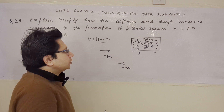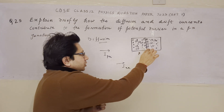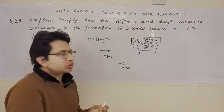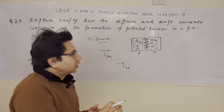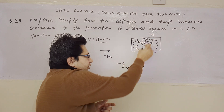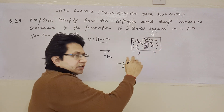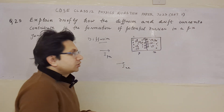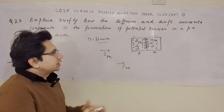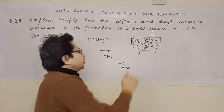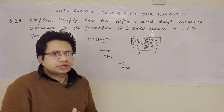At the same time, drift is also taking place. Due to the electric field present in the depletion region, there is a drift current. When the depletion region is forming, there are charges on both sides — positive charge on the left-hand (N-side) side and negative charge on the right-hand side — creating an electric field. Due to this electric field, a drift current is generated.